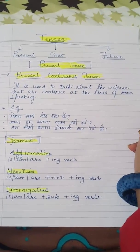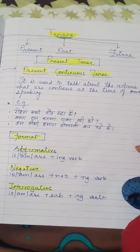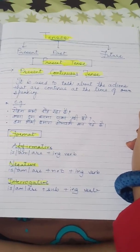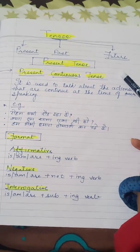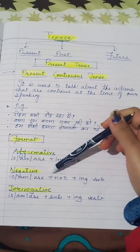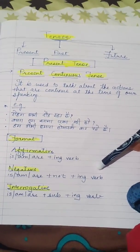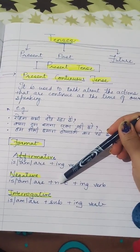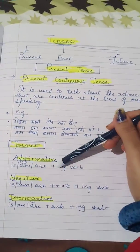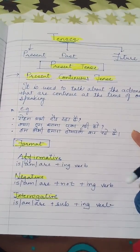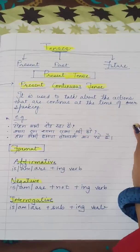Now if you have to form a sentence, there is a format and you have to follow that format. For affirmative sentences, the format is is/am/are plus ing verb. Affirmative sentences are positive — like 'Rohan is now dancing.' If it is 'Rohan is not dancing,' then it is negative. The negative format is is/am/are plus not plus ing verb. For interrogative — which means questions — the helping verb is/am/are comes before the subject. We will learn this well with examples.